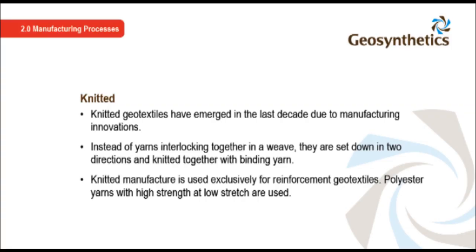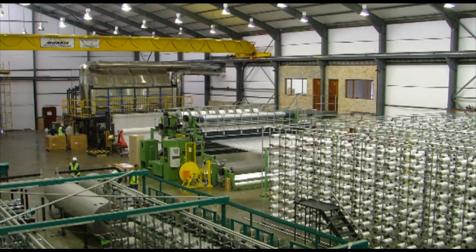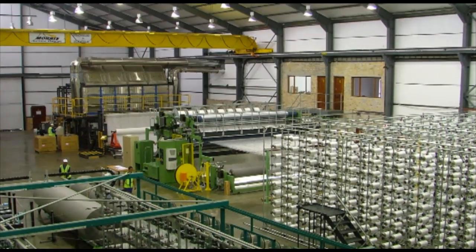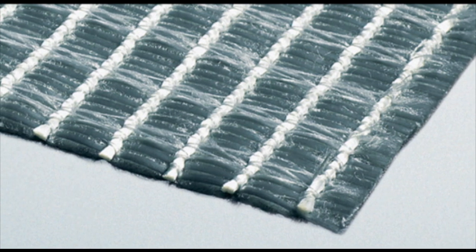Knitted geotextiles have emerged in the last decade due to manufacturing innovations. Instead of yarns interlocking together in a weave, they are set down in two directions and knitted together with binding yarn. Knitted manufacture is used exclusively for reinforcement geotextiles, using polyester yarns with high strength at low stretch. Here is a geotextile knitting line — on the right side you can see many spools of yarn being knitted together. A reinforcing yarn is knitted to a non-woven geotextile to provide greater strength.